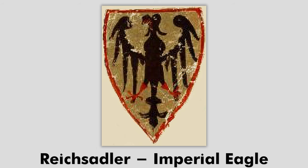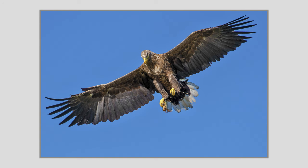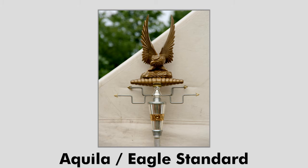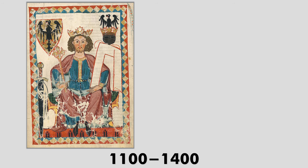This is the Reichsadler, the Imperial Eagle. The eagle has long been a symbol of power and dominion. The black eagle of the Holy Roman Empire banner is derived from the Aquila, or eagle standard of the Roman army. The black eagle in a golden field was the ensign of the German kings in the 12th and 13th century.